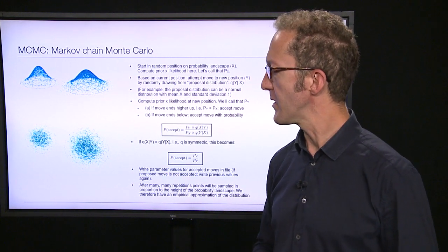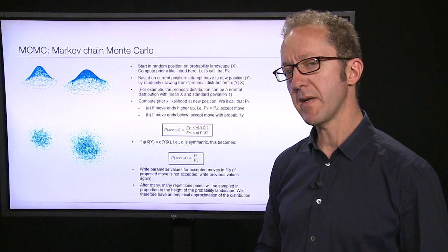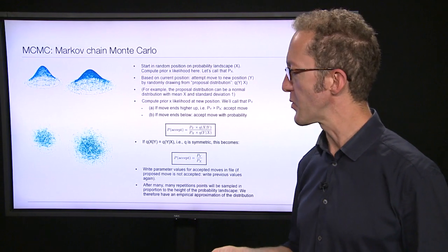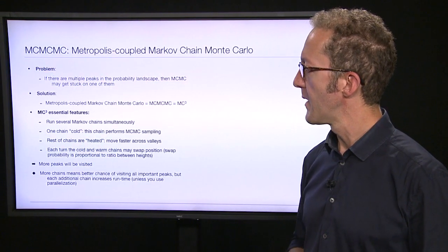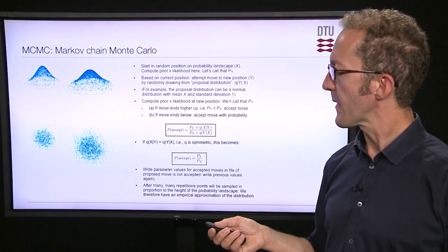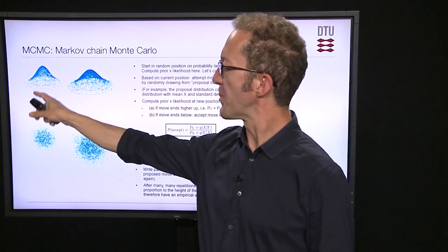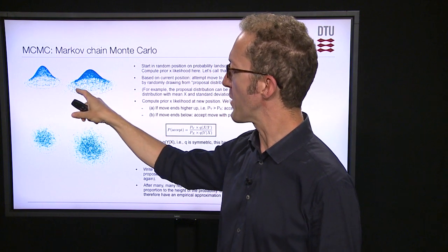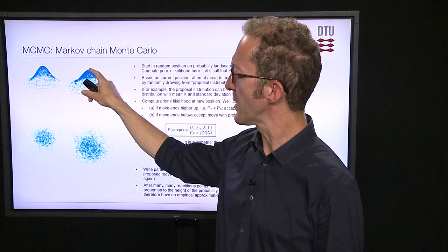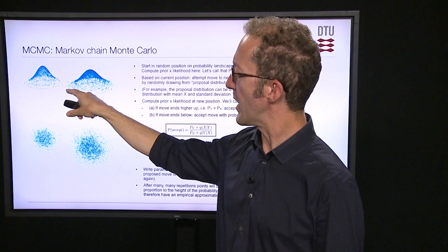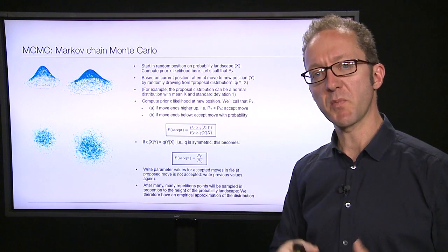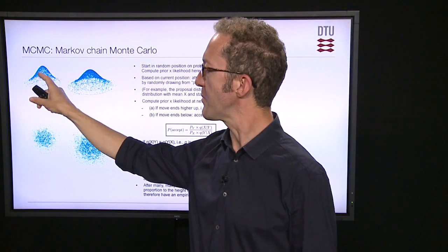This is a very clever trick, and it has really made a difference in allowing Bayesian computation to be possible. There are some problems, though. If we have a probability landscape with more than one peak, it can be difficult for this process to find the second peak, because the rules make it more likely to walk uphill than downhill, rarely moving down into the foothills to cross to another peak.